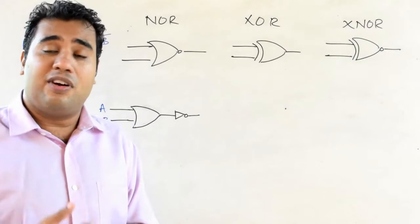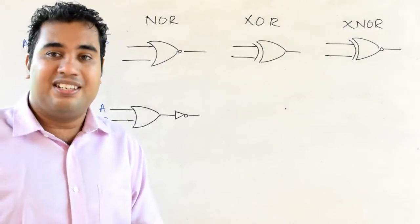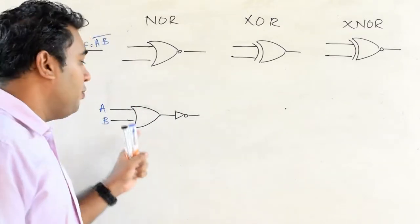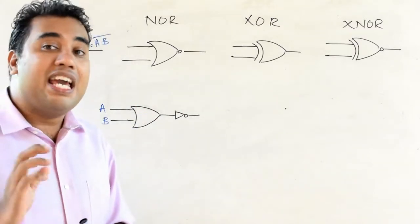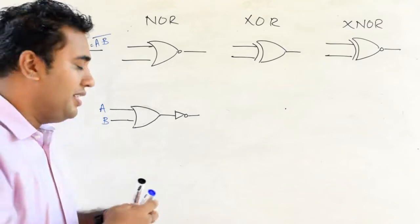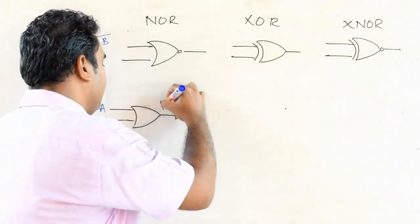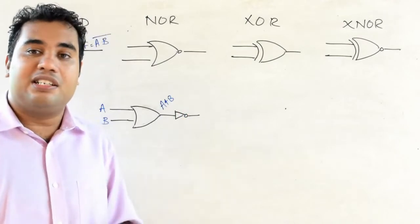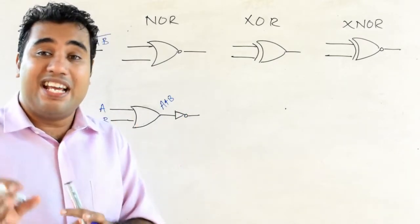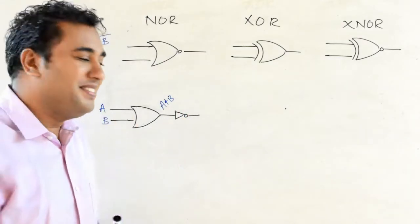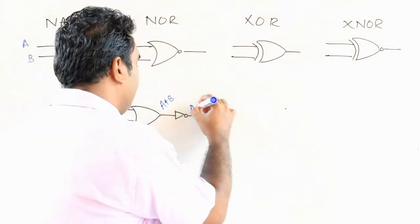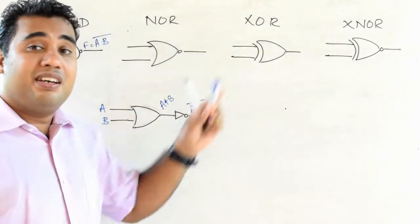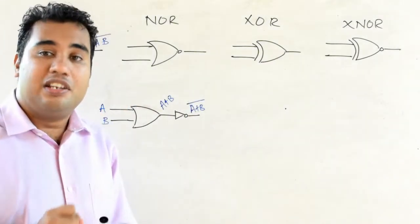Now let's see the functionality of the NOR gate. It is the combination of OR and NOT gates. The output of the OR gate will be A+B, and that will be an input to the NOT gate, which will generate A+B bar. That will be the equivalent output of the NOR gate.